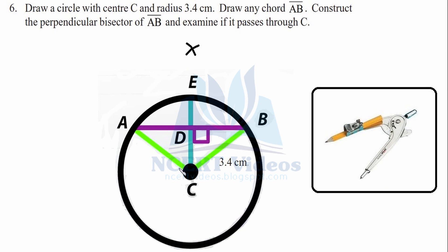Open the compass with a radius greater than half of AB and cut arcs from B, then put the needle at A to get the intersection points. When you connect these lines, you see the perpendicular bisector passes through C. The answer is yes — the perpendicular bisector of a chord passes through the center C. That was question 6.